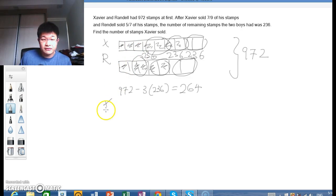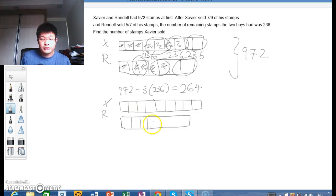So if we redraw the model here, Xavier and Randall. Xavier again has got 9 units: 1, 2, 3, 4, 5, 6, 7, 8, 9. Randall has got 7 units.